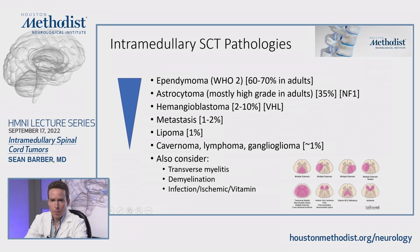The most common subtype in adults is ependymoma, which is a WHO grade 2 tumor — relatively low grade — accounting for 60% of all intramedullary tumors in adults. This is different in children, where astrocytoma is more common. But in adults, ependymoma is first.